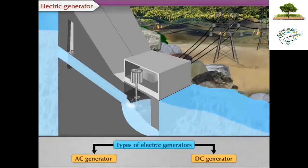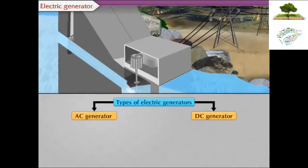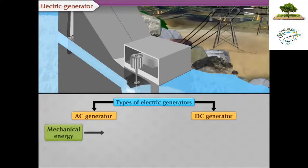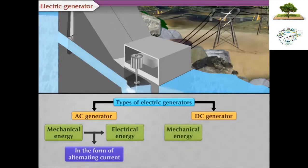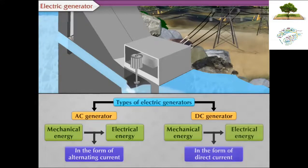There are two types of electric generators, such as AC generator and DC generator. In an AC generator, mechanical energy is converted into electrical energy in the form of alternating current. Whereas in a DC generator, mechanical energy is converted into electrical energy in the form of direct current.